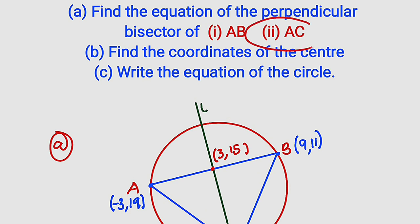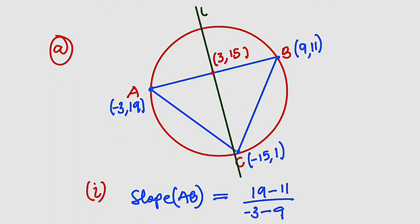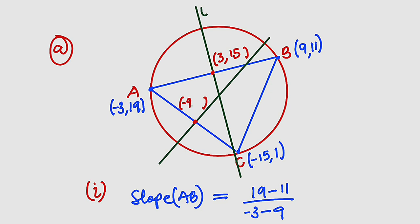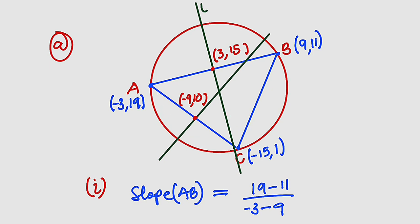Secondly, we are asked to find the equation of the perpendicular bisector of line AC. We need the midpoint where the perpendicular bisector intersects AC. For x: (-3 + (-15)) / 2 = -18 / 2 = -9. For y: (19 + 1) / 2 = 20 / 2 = 10. So the midpoint is (-9, 10).